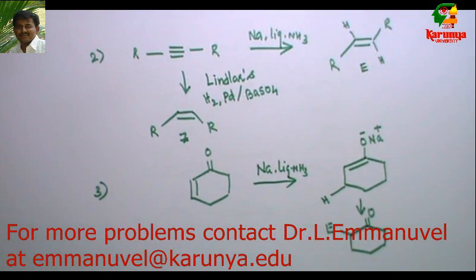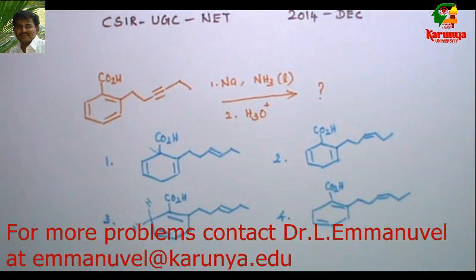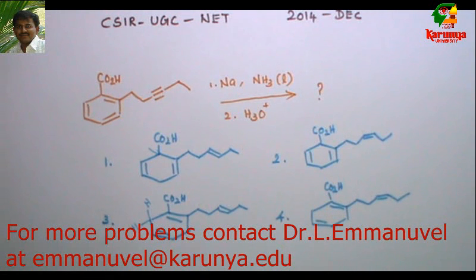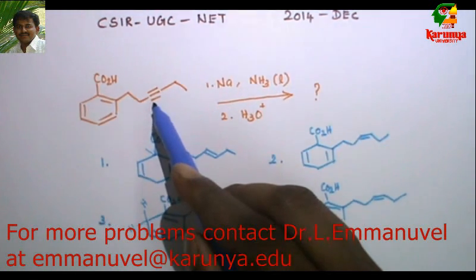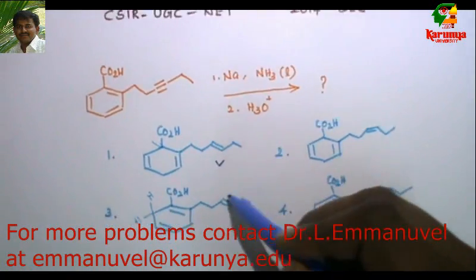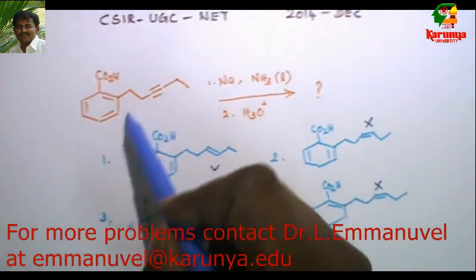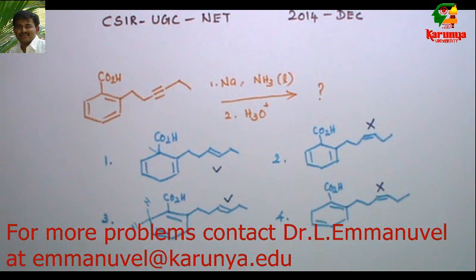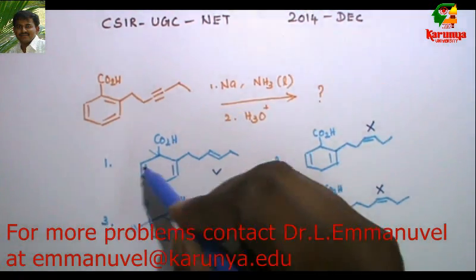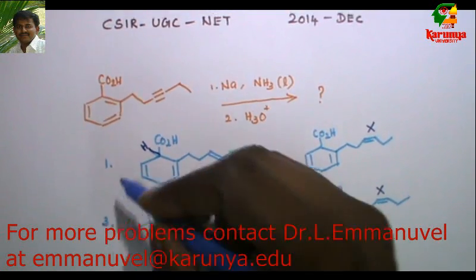So those three are the most important reactions in which sodium in liquid ammonia is used. In the given problem, there is an aromatic ring as well as a triple bond — both can undergo reaction with sodium in liquid ammonia. The alkyne is reduced to give trans-olefin, so you will not get Z-olefin. Since the group present is a carboxylic acid — an electron-withdrawing group — we get the product where hydrogen is added to the carbon bearing the electron-withdrawing group.